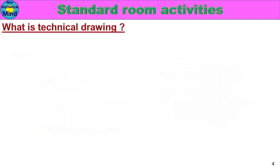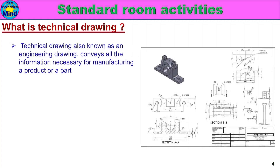What is Technical Drawing? Technical drawing, also known as engineering drawing, conveys all the information necessary for manufacturing a product or a part. If you produce any child part, sub-assembly, or final assembly part, a technical drawing or engineering drawing is prepared. Once you prepare the technical drawing, you will start the production and ensure the quality of the product.